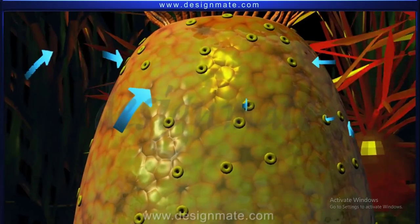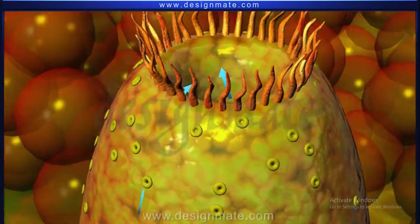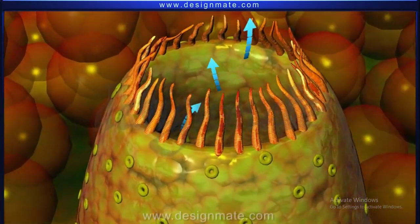Water enters the sponge body through the Ostia and then is eliminated from the body through the Osculum.